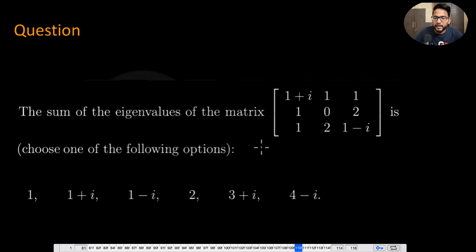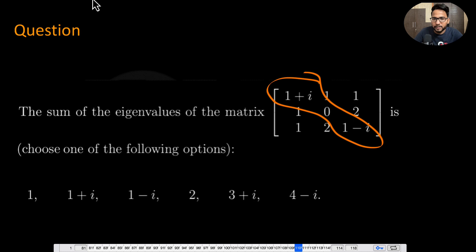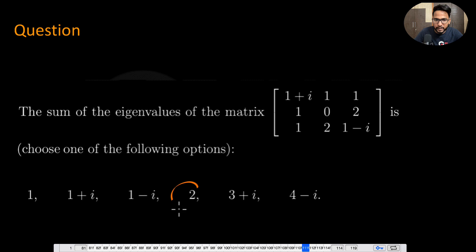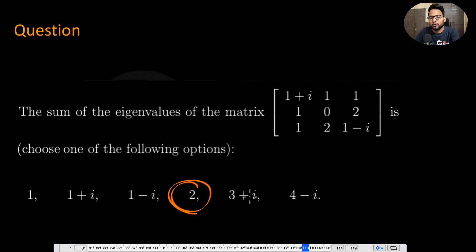Now let's see this question: the sum of the eigenvalues of this matrix. You just sum all the trace elements. The answer is 2. The options were 1, 1 plus i, 1 minus i, 2, or 3 plus i, and 2 is the correct option. You don't need to find the eigenvalues and then sum them — that's the beauty of these two magical properties.